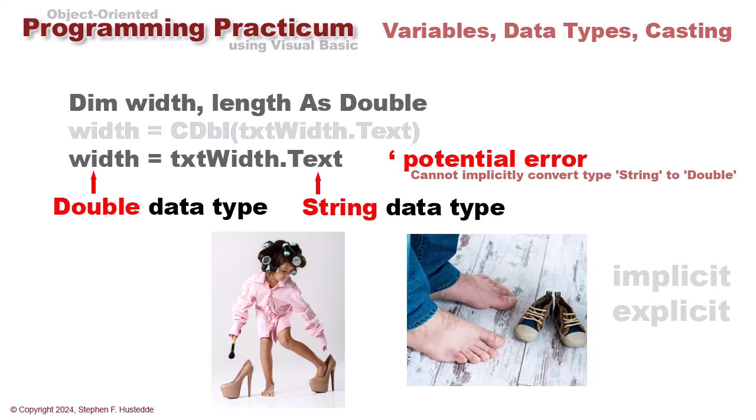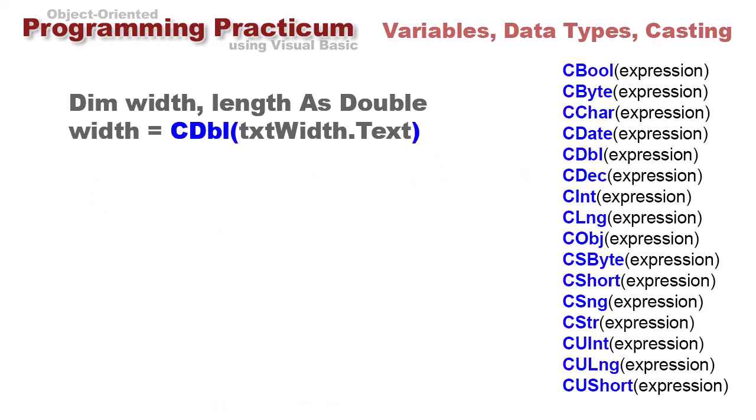If we're doing things implicitly like in this particular case, it will automatically convert the text to the width as long as it fits. But using the cdbl is an explicit conversion, and we want to get in the practice of doing that. We always want to convert from one data type to another because it will help us to avoid errors down the road, particularly if we move from one language to another.